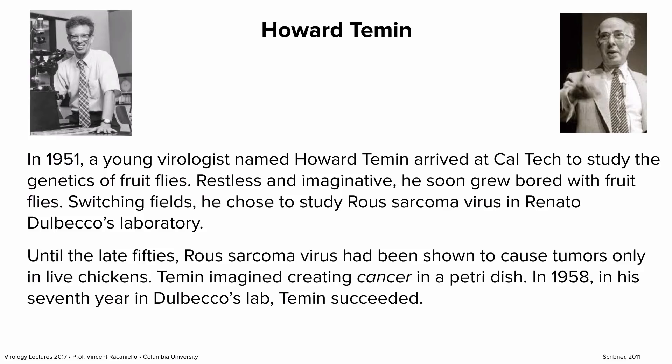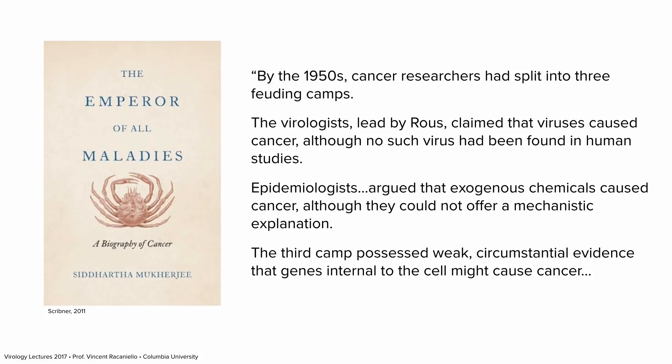By the 1950s, cancer researchers had split into three feuding camps: the virologists, led by Rous, claimed viruses cause cancer though no such virus had been found in human studies; epidemiologists argued chemicals cause cancer; and a third camp had weak circumstantial evidence that genes internal to the cell might cause cancer. They were all right, and eventually it all came together.